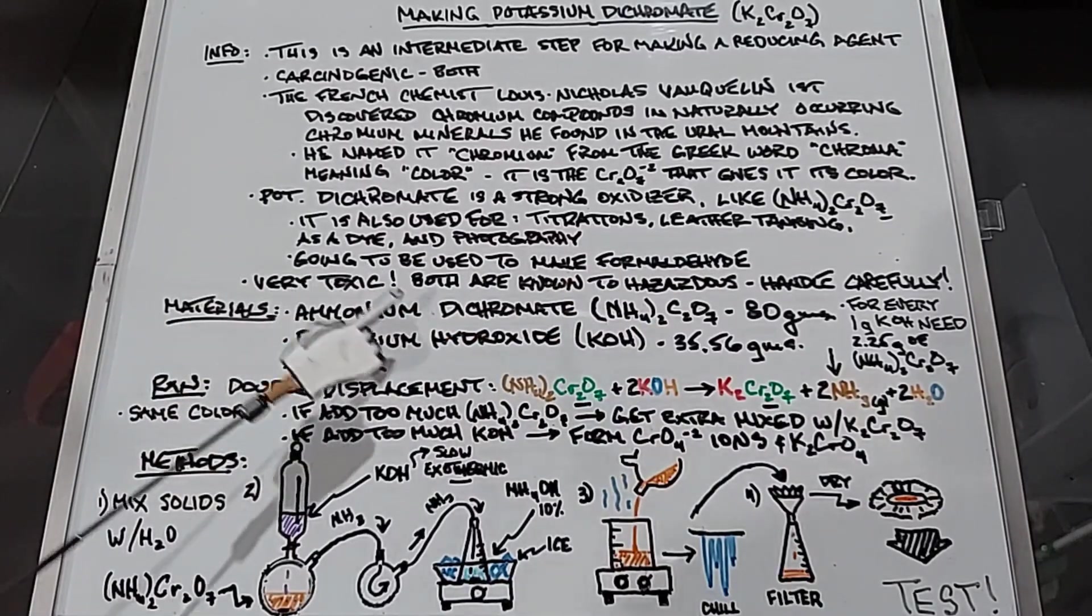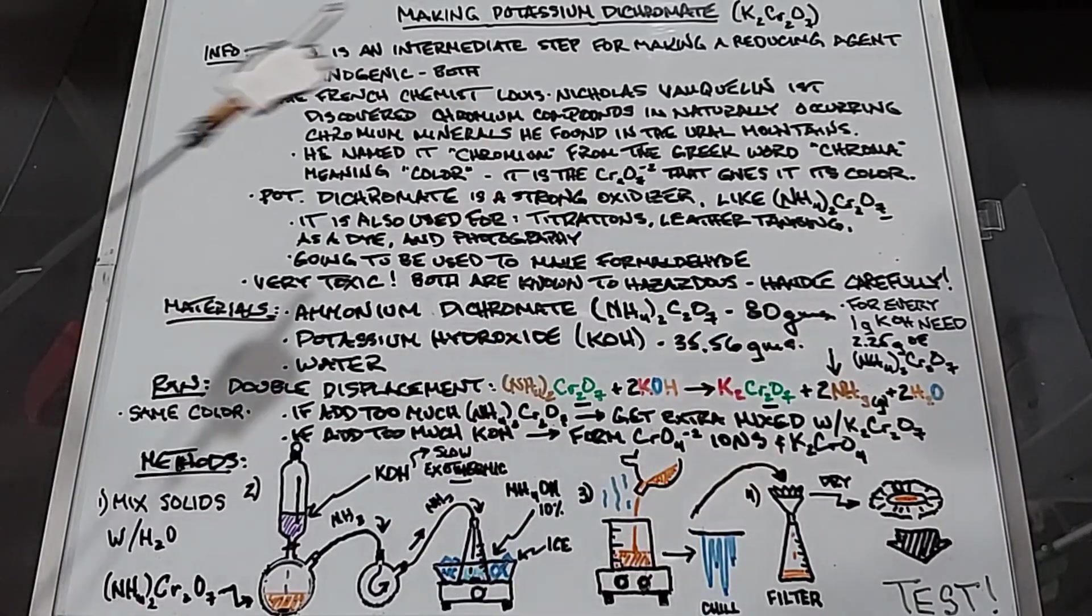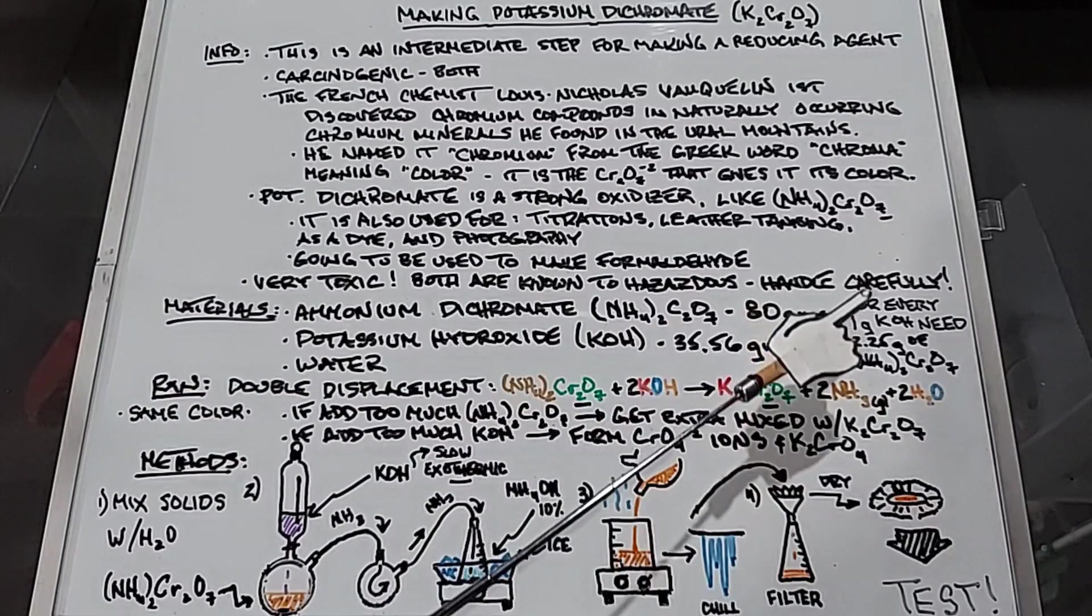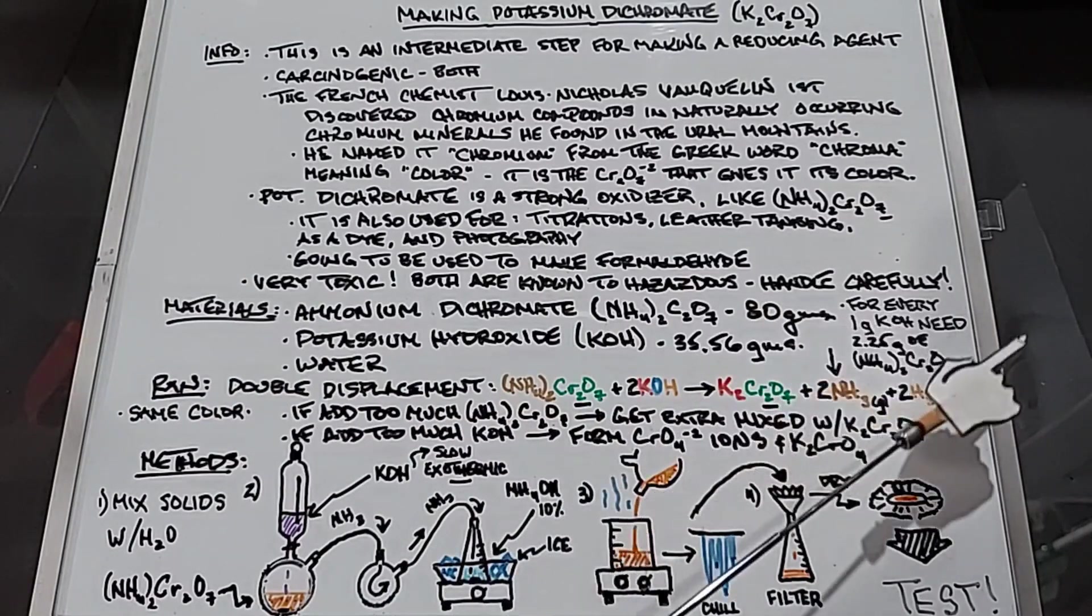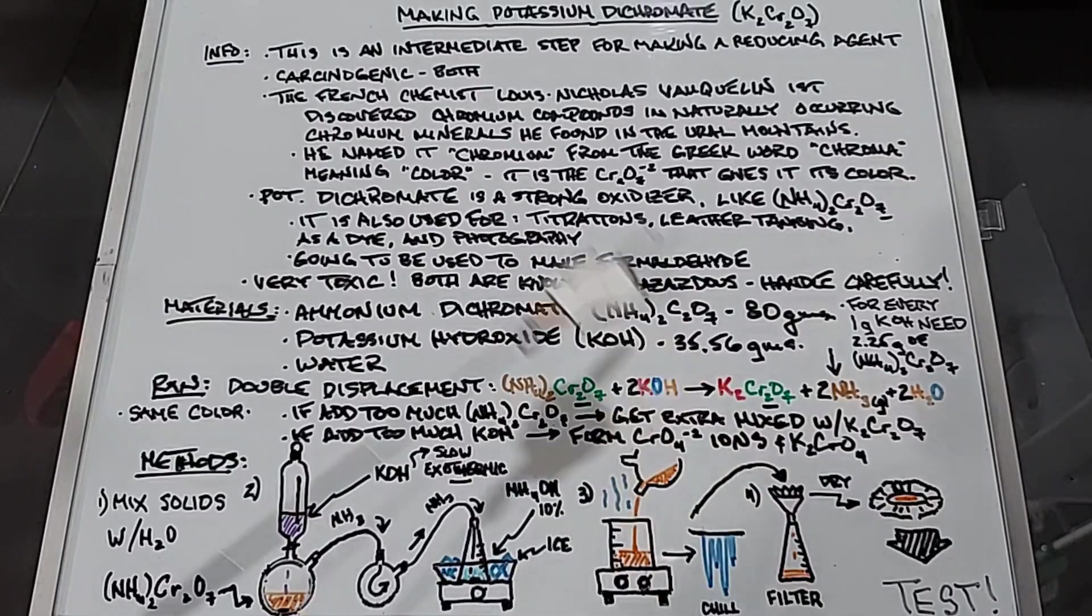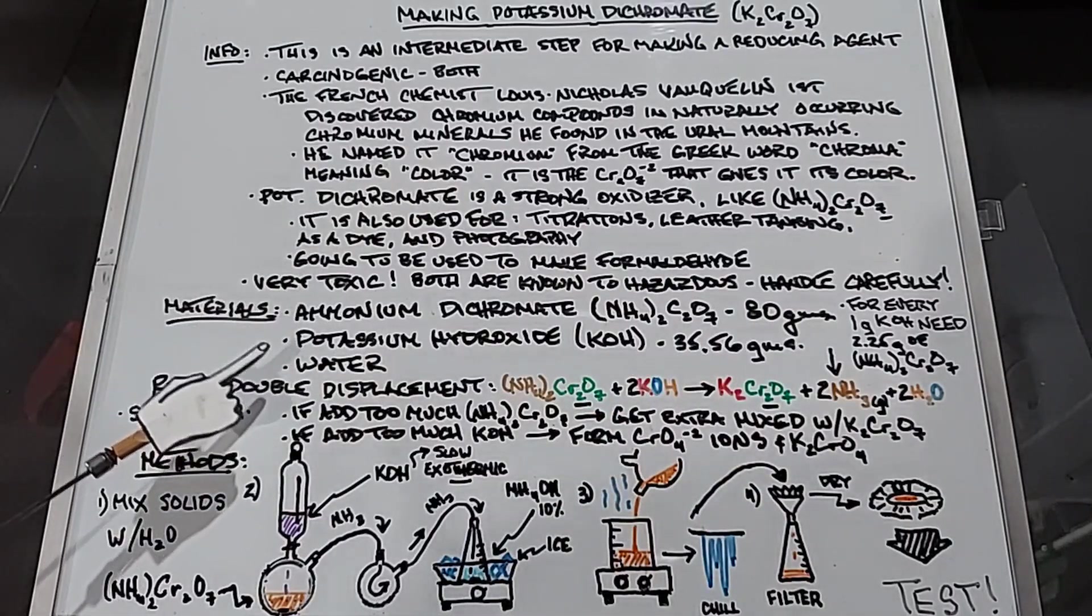For our materials, we need ammonium dichromate, 80 grams, and potassium hydroxide, 35.56 grams. For every one gram of potassium hydroxide, we need 2.25 grams of ammonium dichromate in order to work out the stoichiometry. Of course, we need water to dissolve both of these in.